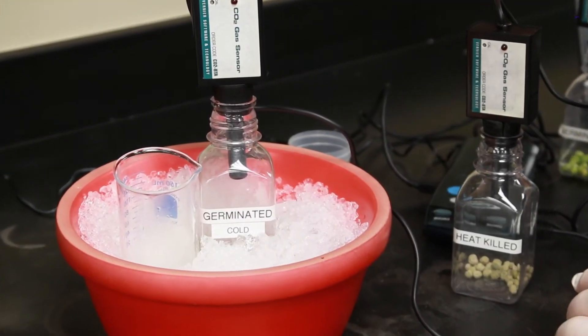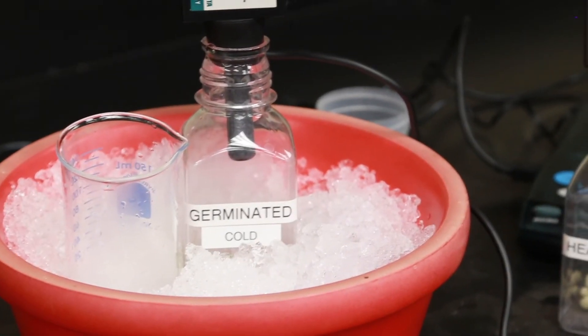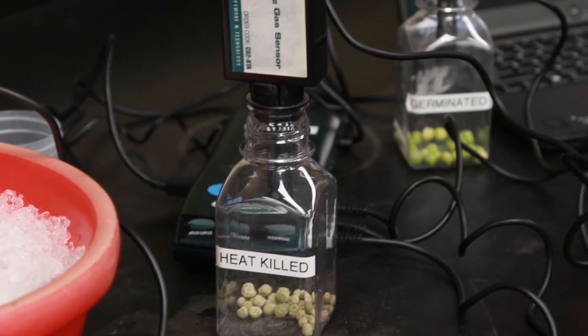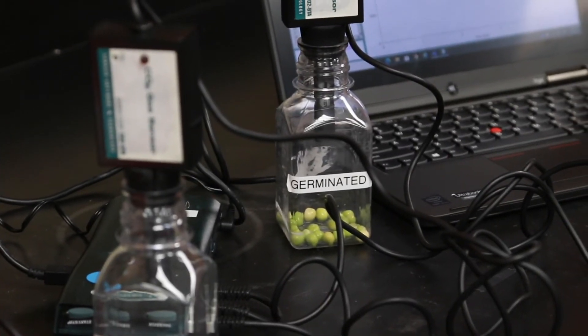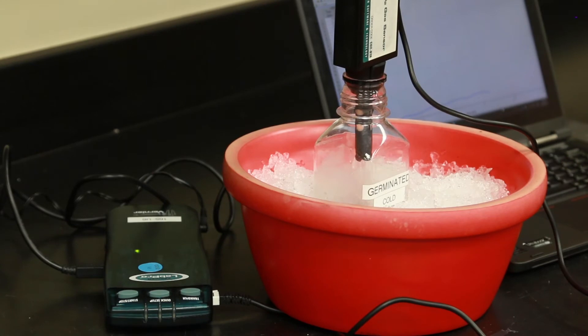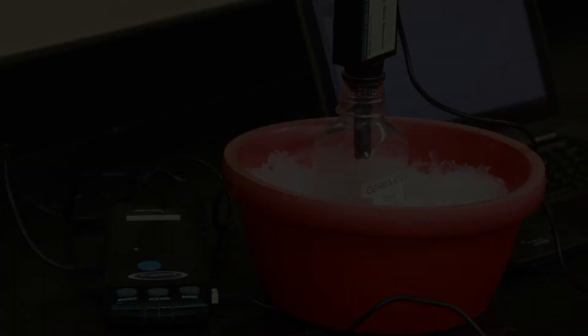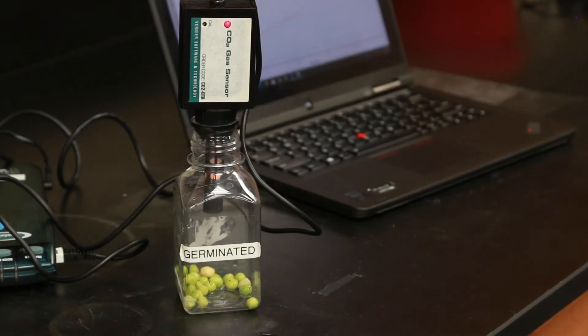Once everything has equilibrated we're now ready to begin collecting some data. So here we're just taking a look, we're going to be measuring data for cold peas, heat killed peas, and room temperature germinated peas. Here we have data collection for the cold peas, you can see the light blinking on the sensor that's telling us that data is being collected. We also have the sensor collecting data on heat killed peas and finally here on the germinated peas.